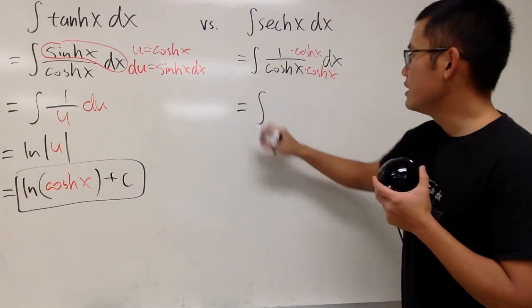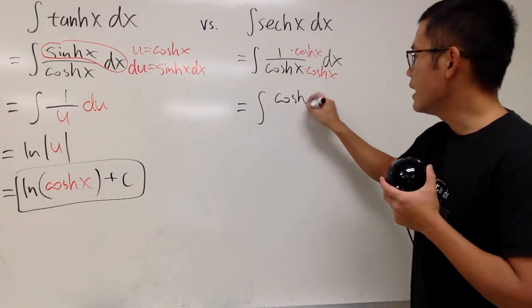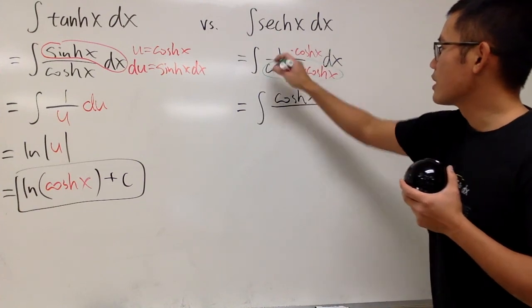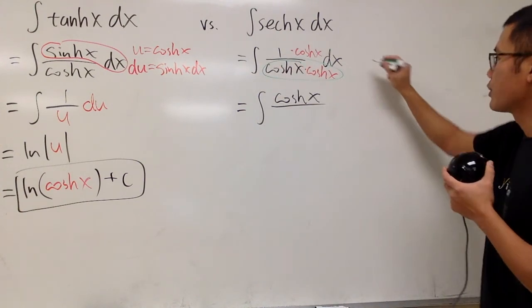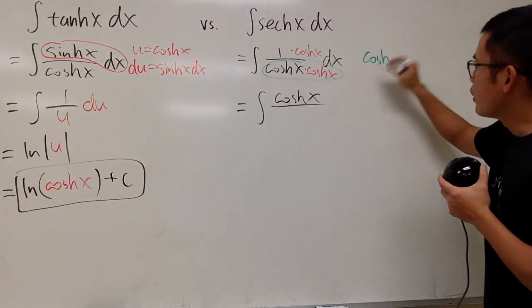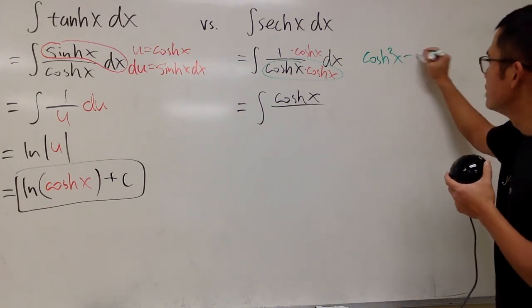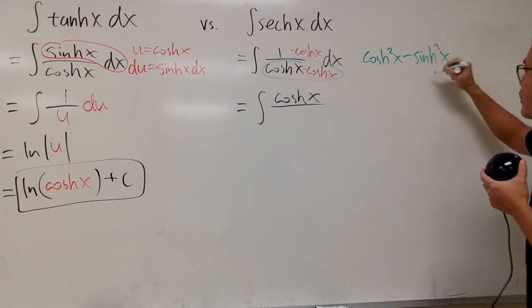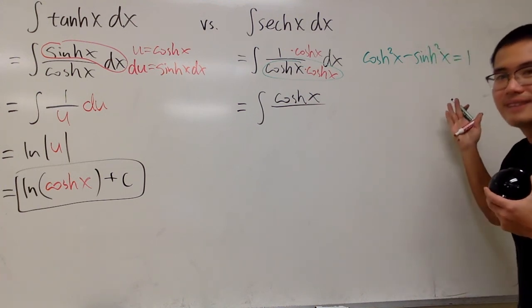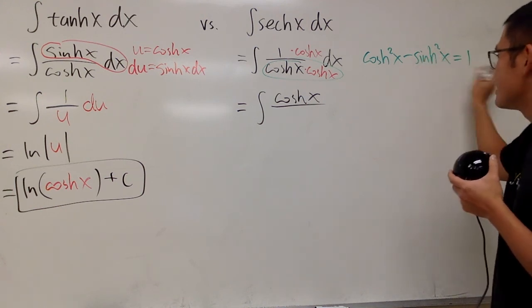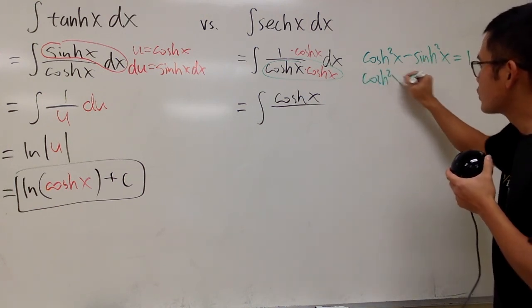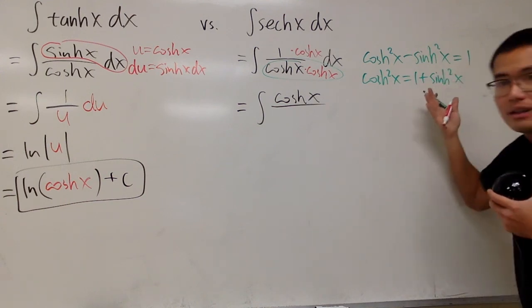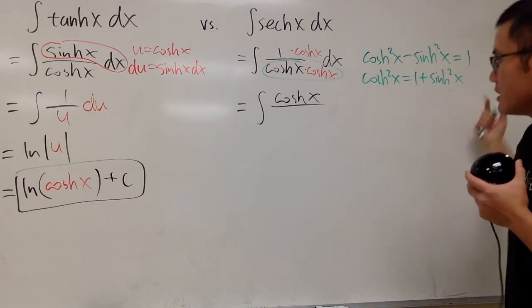Well, have a look here. This is the integral on the top is cosh x over, on the bottom, notice that this is just cosh square x. And let me write this down here for you guys. Recall that cosh square x minus sinh square x, this right here will give us 1. And of course, we can just add this on both sides, so we can say cosh square x is equal to 1 plus sinh square x. Much better.